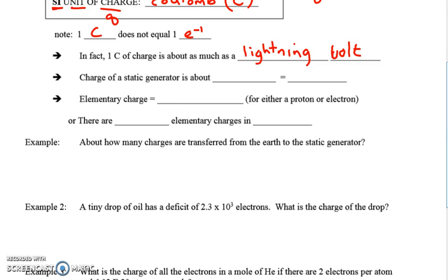When we got shocked as a class by the static generator, you might be wondering, how much charge was transferred? Well, it definitely wasn't a lightning bolt, so it was definitely less than one coulomb. It was around one microcoulomb, and that, of course, is 1 times 10 to the negative 6 coulombs. So every day, getting a decent shock, you're talking a millionth of a coulomb. So you can feel it, it's annoying, but it's not going to harm you.